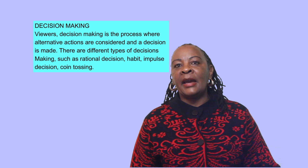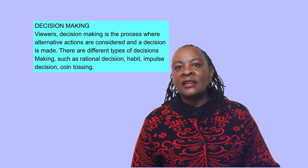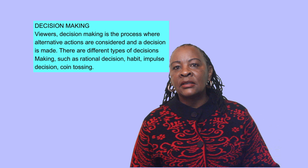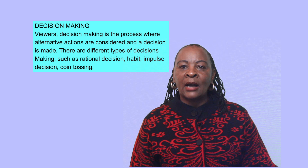There are five steps in the rational decision making process: define the decision, define the goals, define alternative solutions to the problem, choose the best alternative, and evaluate your decision. Very importantly, you should always write them down in order and not mix the steps.